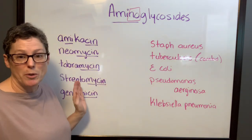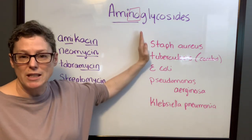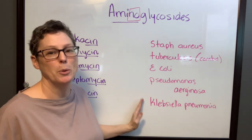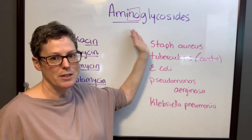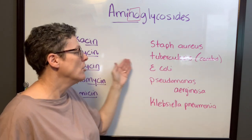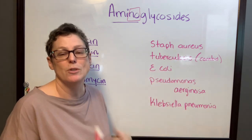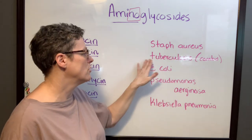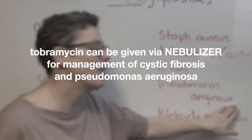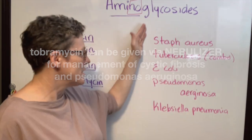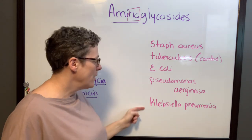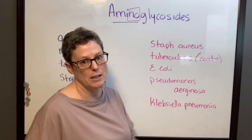In terms of ants, we want to get rid of them — we step on them. These are diagnoses you might see in patients on an aminoglycoside: Staph aureus, tuberculosis (used in combination with other drugs), E. coli, Pseudomonas aeruginosa, and Klebsiella pneumoniae. Step on the ants — that's your mnemonic for aminoglycoside indications.